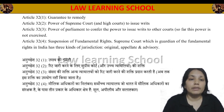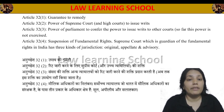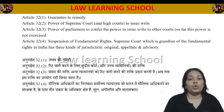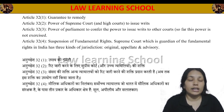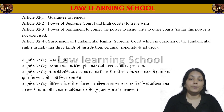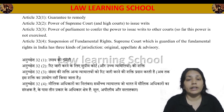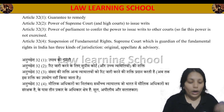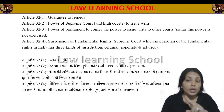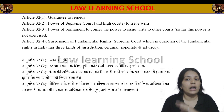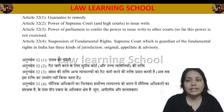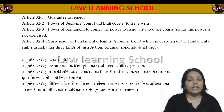Article 32 Clause 1 talks about the guarantee of remedy. Article 32 Clause 2 talks about the power of the Supreme Court and High Court. Article 32 Clause 3 states that Parliament has given power to issue writs, and that no other court can use this power. Article 32 Clause 4 talks about the suspension of fundamental rights.